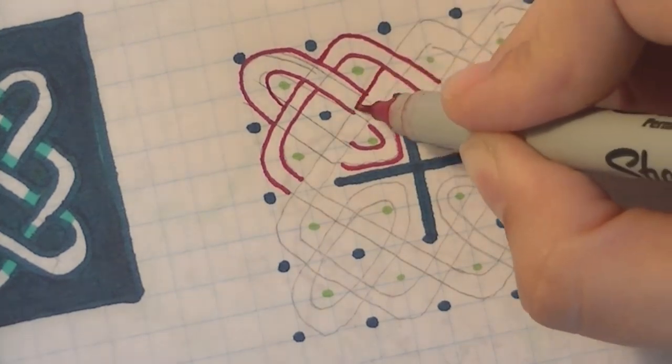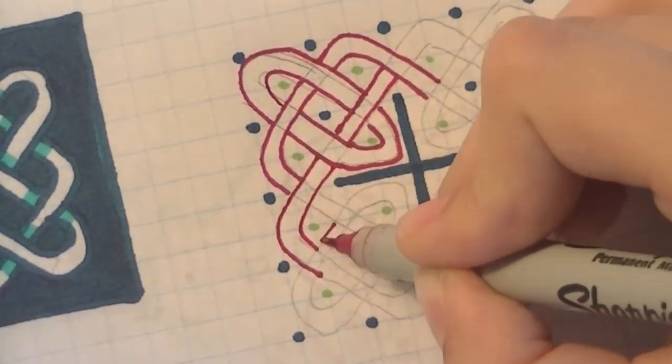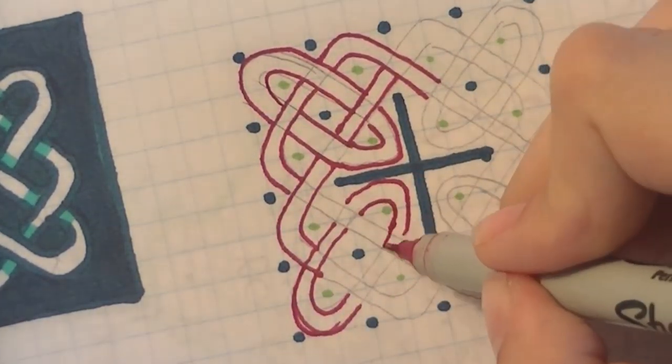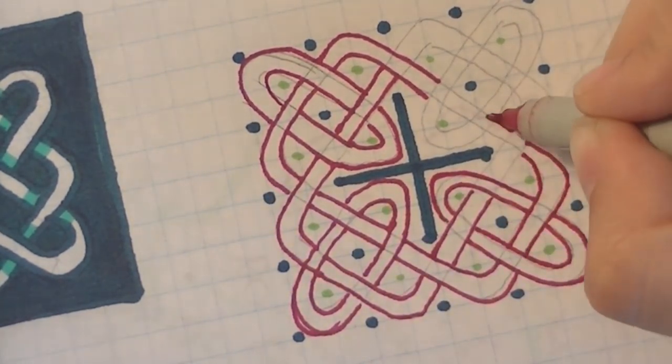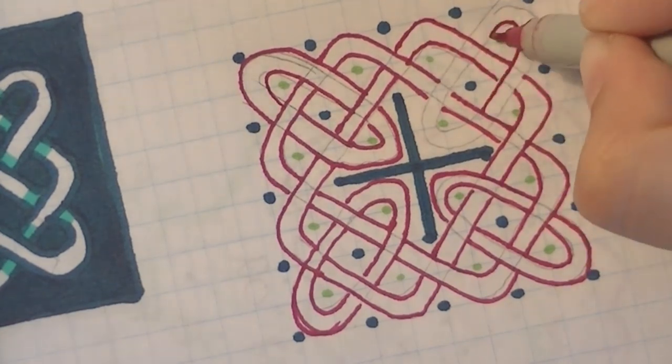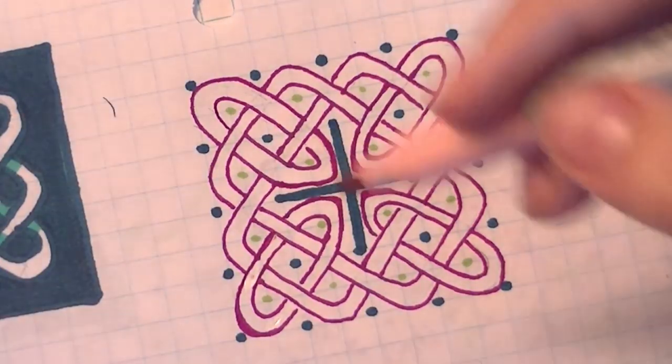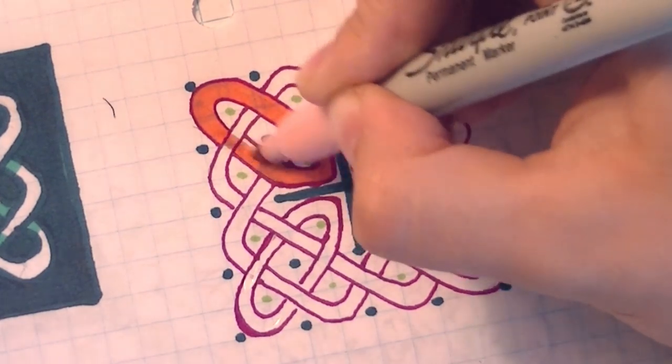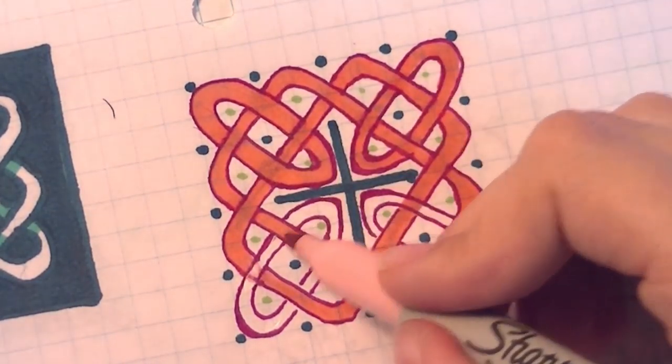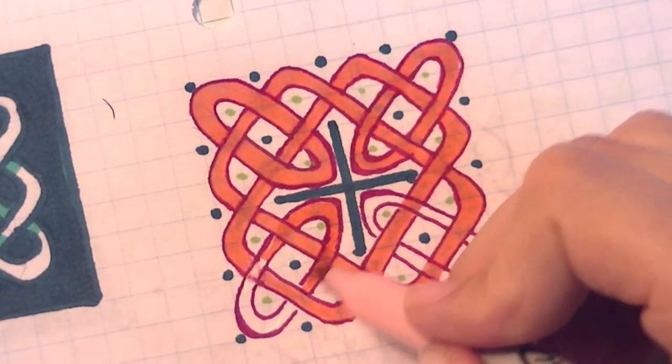This does take some practice. I can't tell you how many times I have messed up. See? I just messed up right there, lower left-hand corner. I did not do the over-under correctly. And, of course, these are just quick sketches, so none of the bands are the right distance apart. I mean, they're not all the same thickness. Then just color it in, decorate it up however you want, and you have another pretty little Celtic knot!